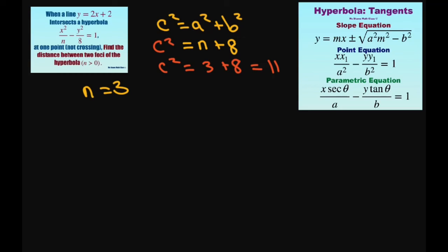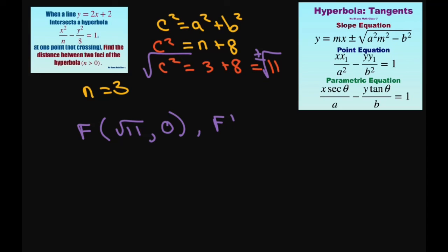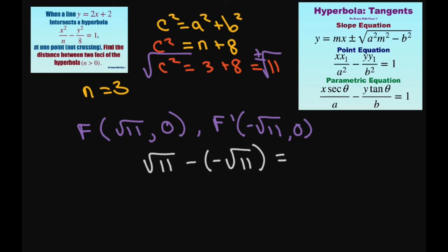Therefore my foci — taking the square root of both sides, you get plus or minus square root of 11. Foci 1 is at square root of 11 comma 0, and the other focus f prime is at negative square root of 11 comma 0. The distance between the two foci is square root of 11 minus negative square root of 11, which gives 2 square root of 11.